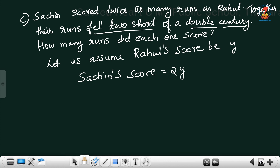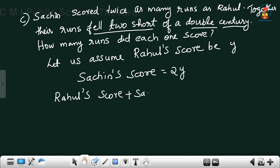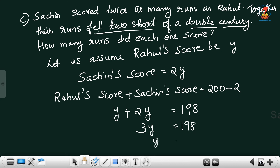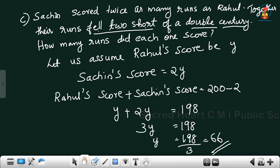Therefore Sachin's score equals twice as many runs as Rahul, means 2y. Together the runs fell too short of a double century — too short means minus 2. So Rahul's score plus Sachin's score: y plus 2y equal to 200 minus 2, equal to 198. 3y equal to 198. y equal to 198 divided by 3, equal to 66. Therefore Rahul's score is equal to 66.